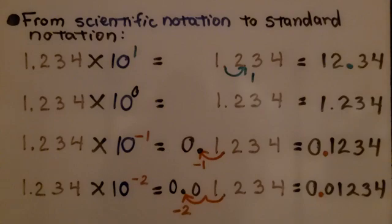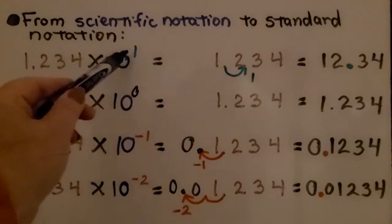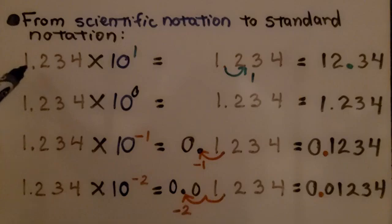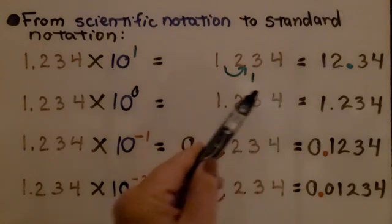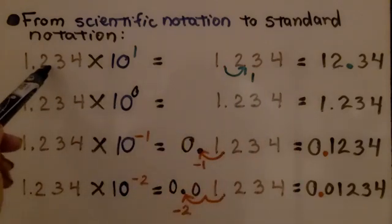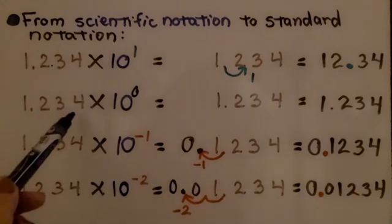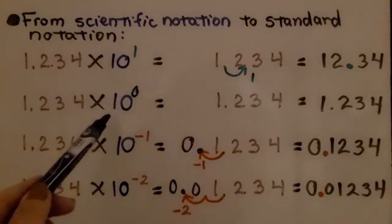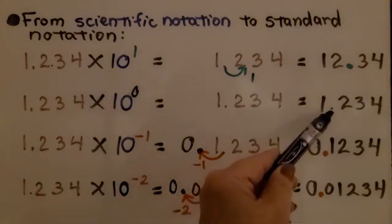From scientific notation to standard notation: here we have 1.234 times 10 raised to the first power. That means we're going to move this decimal point one hop to the right, and it's equal to 12.34. We move the decimal point one place. Here we've got the same decimal number times 10 raised to the zero power — any number raised to the zero power equals 1 — so we still have 1.234.